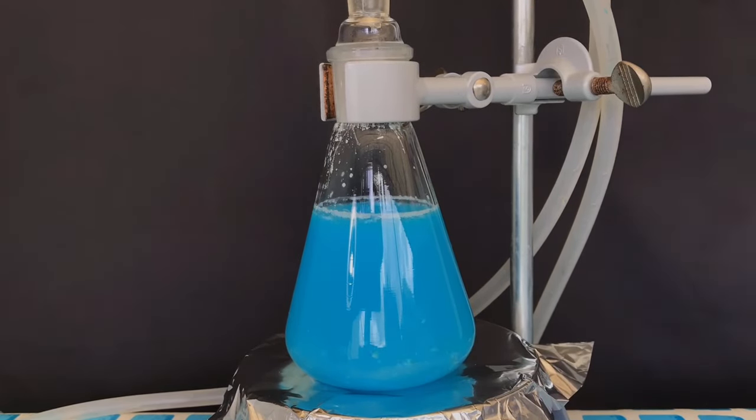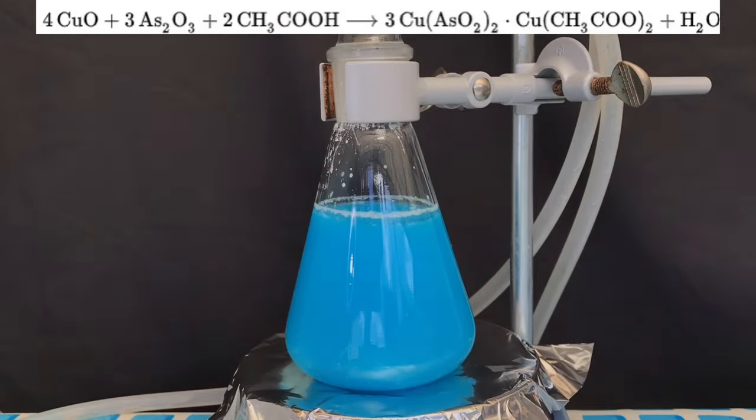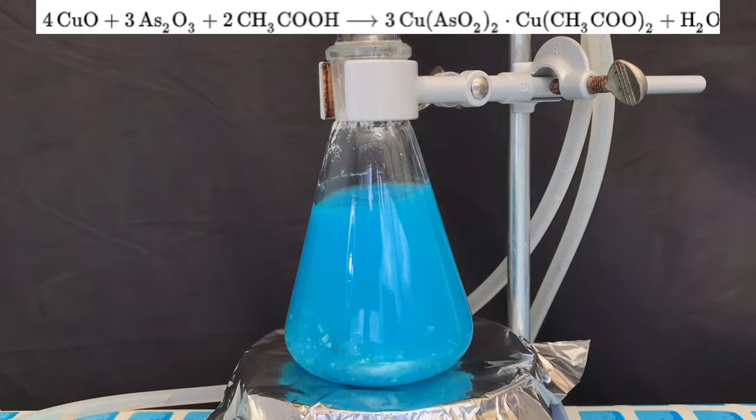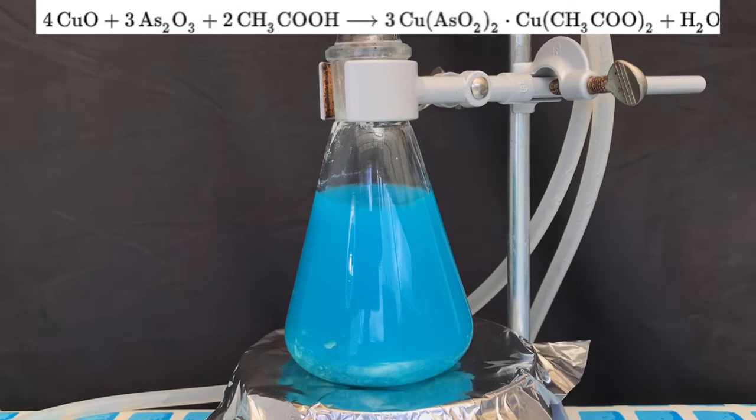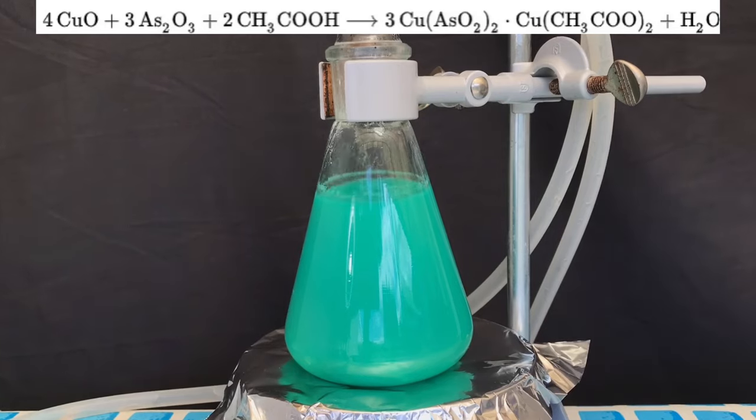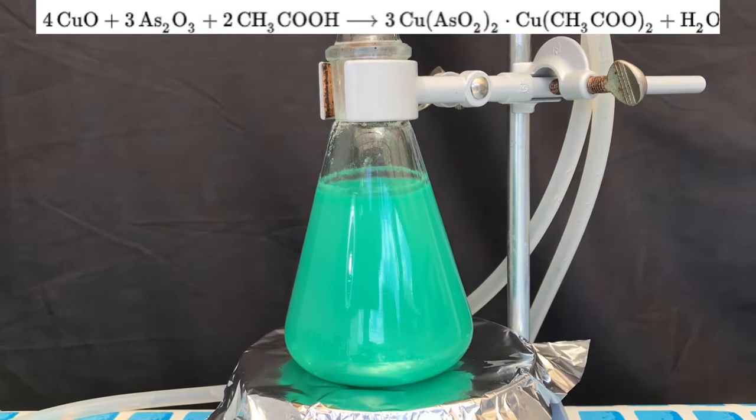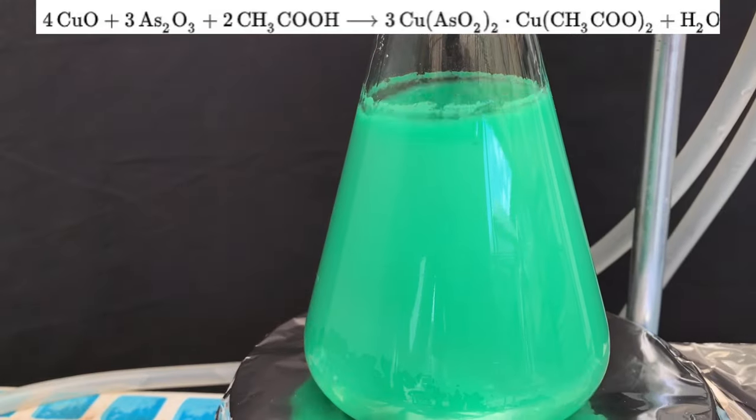The contents were refluxed for exactly 1 hour. The entire reaction taking place looks like this: Copper oxide, arsenic 3 oxide, and acetic acid form Paris green and water. We split the reaction up and therefore needed to use more acetic acid. Our formed copper acetate would react in the second step to form Paris green, water, and acetic acid.